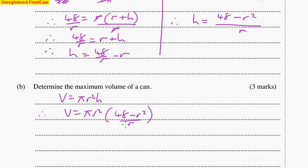Well, let's make this look simpler before we do the differentiating. The r at the bottom will divide into one of the r's at the top. So I get πr(48 - r²). And that volume equals, then multiplying out that bracket, I get 48πr - πr³.